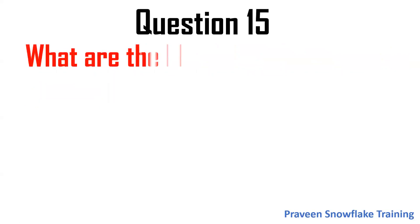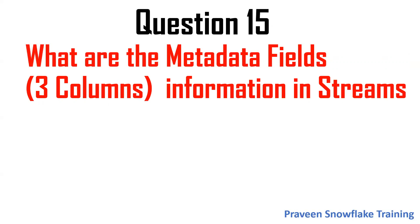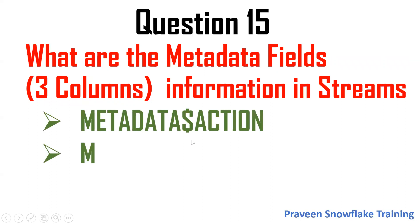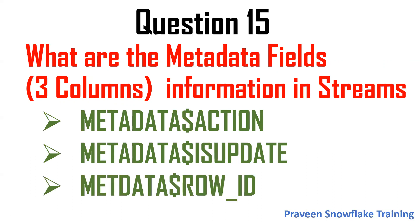The next question is: what are the metadata fields in Snowflake streams? There are three metadata columns in streams. They are: METADATA$ACTION, METADATA$ISUPDATE, and METADATA$ROW_ID. By using the ACTION field, we can determine whether a record is an insert or delete. By using ISUPDATE, we can determine if it is an update or not. METADATA$ROW_ID gives a unique row identifier.